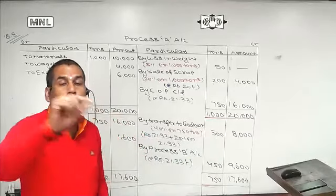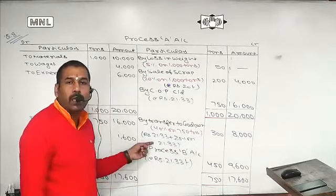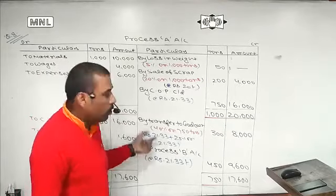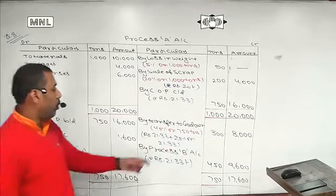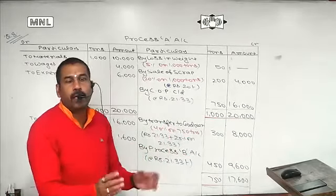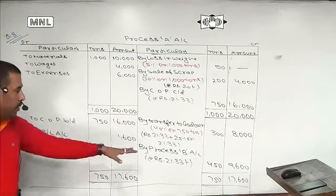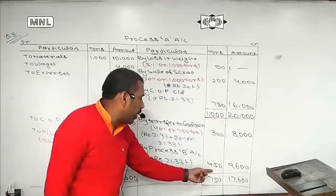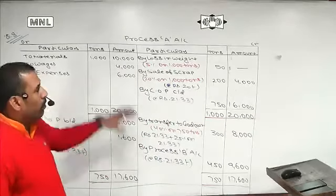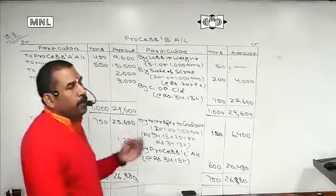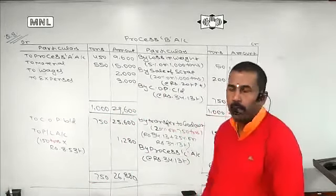The goods going to the godown are sold at cost plus 25% profit. The cost rate is 21.333 plus 25%, which gives a sale value per ton. The cost is 8,000, the profit is 1,600, giving a sale value. The remaining figures build up to totals of 3,600 and 3,000, with a balancing cost of approximately 1,000.